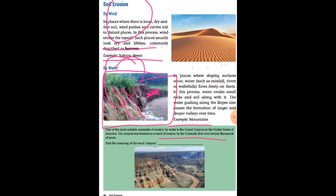One of the most notable examples of erosion by water is the Grand Canyon in the United States of America. The canyon was formed as a result of erosion by the Colorado River over several thousands of years.